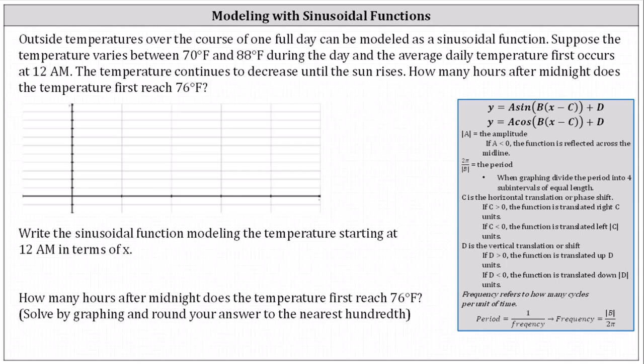Outside temperatures over the course of one full day can be modeled as a sinusoidal function. Suppose temperature varies between 70 degrees and 88 degrees Fahrenheit during the day and the average daily temperature first occurs at 12 a.m. The temperature continues to decrease until the sun rises. How many hours after midnight does the temperature reach 76 degrees Fahrenheit?